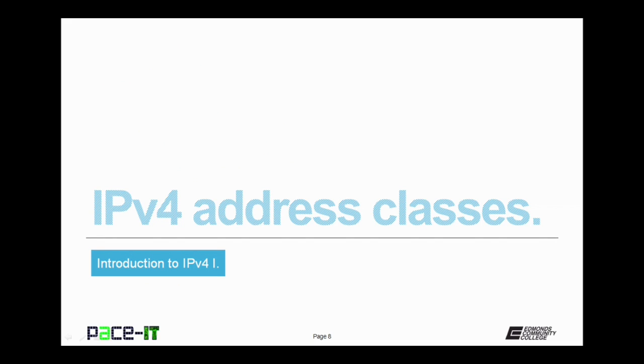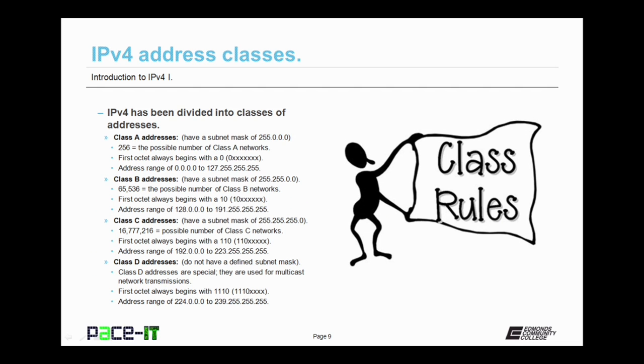Now that we have that covered, let's move on to IPv4's address classes. IPv4 has been divided into classes of addresses. There's class A, class B, class C, class D, and class E. Now you only really need to know about classes A through D, so let's cover those now.